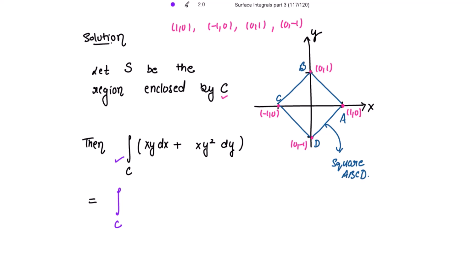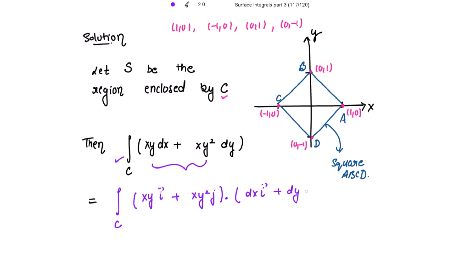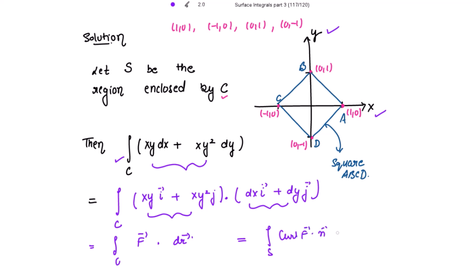This given integral can be written using Stokes' theorem. I need the line integral of F vector dot product with dr vector, written as the dot product of (xy·i + xy²·j) with (dx·i + dy·j). By Stokes' theorem, this line integral equals the surface integral of curl of F vector dot product with n vector dS.